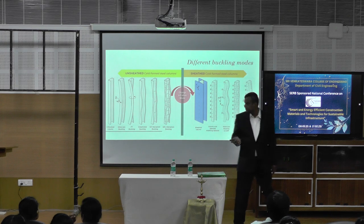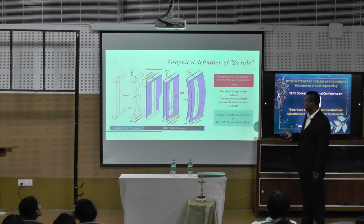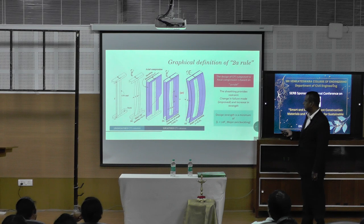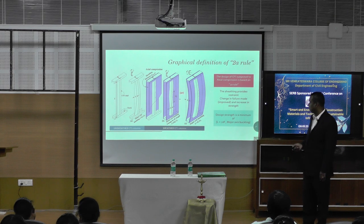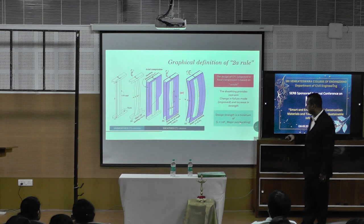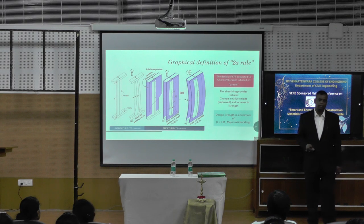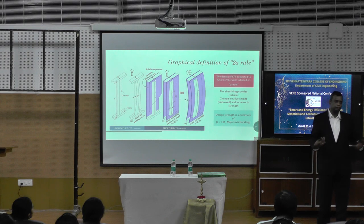So this is the CFS stud — the track, top track, bottom track. Without sheathing it buckles about the minor axis. We put the sheathing; because of sheathing it goes to minor axis buckling but the spacing is 2Df, or it undergoes major axis buckling where the entire length is taken into consideration. The design says the governing case is the minimum of L equal to 2Df or major axis buckling. By putting sheathing we have transformed the failure mode, which is a saving because we are not using bridging or blocking — internal members are reduced.